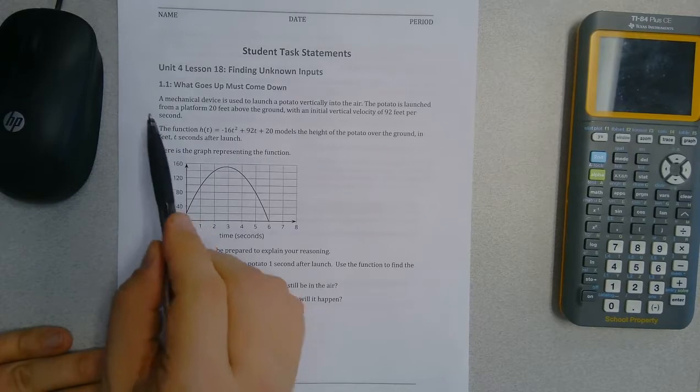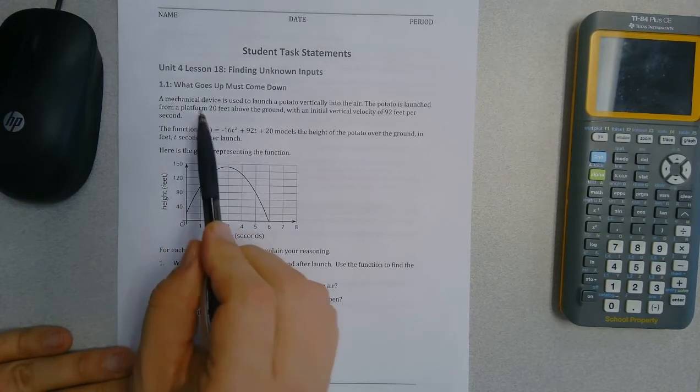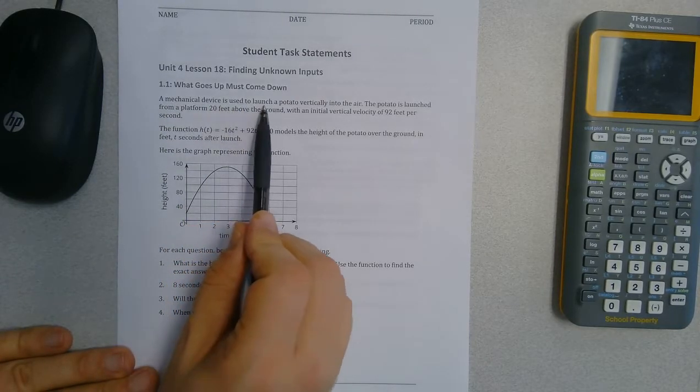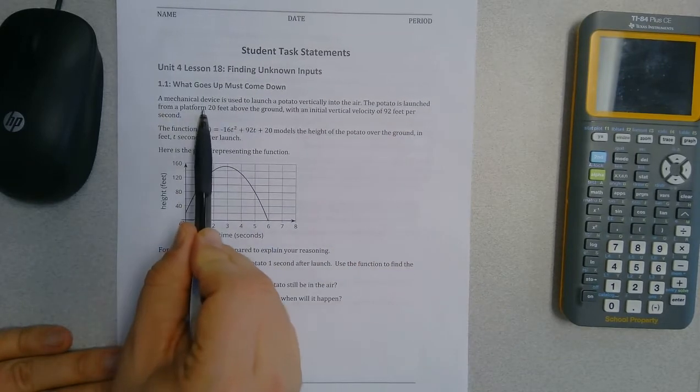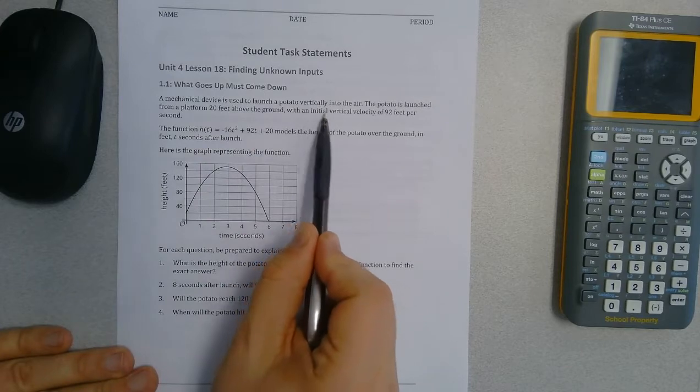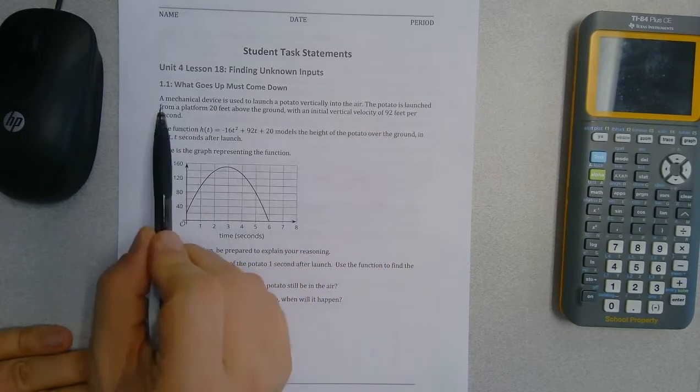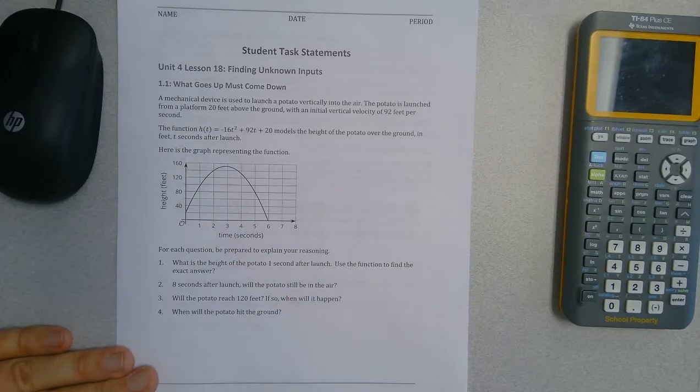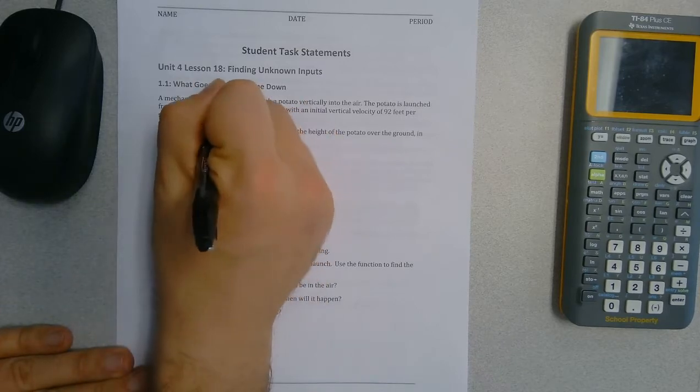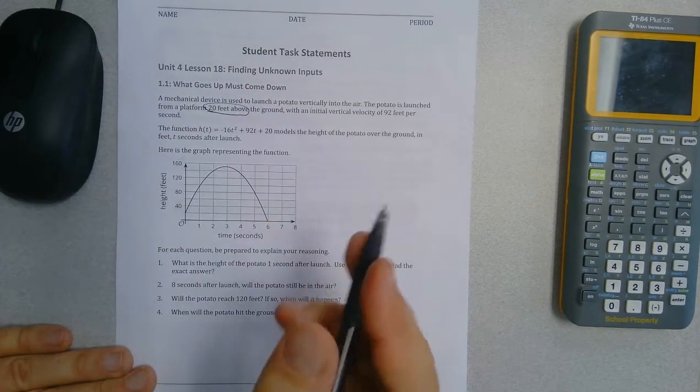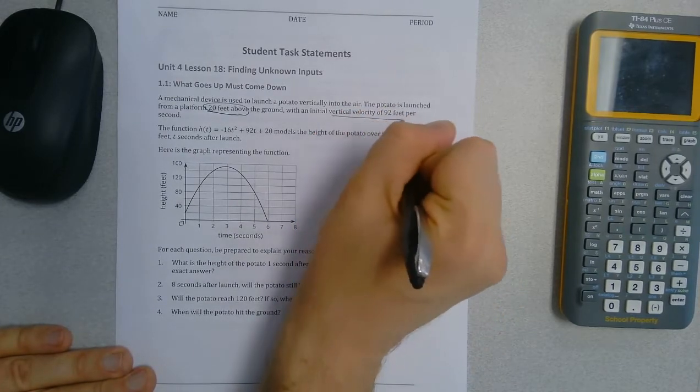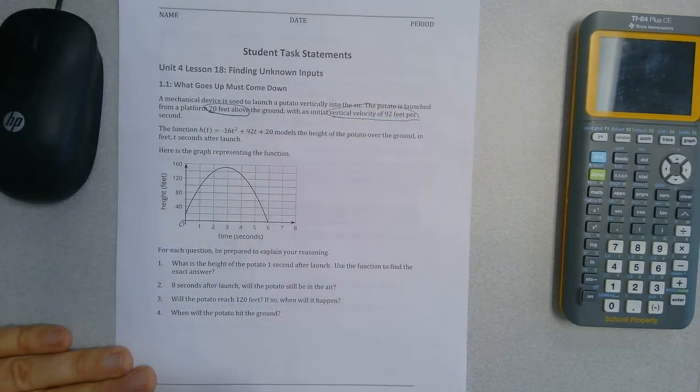So first, we're going to read and understand the problem. A mechanical device is used to launch a potato vertically in the air. The potato is launched from a platform 20 feet above the ground with an initial vertical velocity of 92 feet per second. Now, I'm going to circle this and put 20 feet above the ground. That seems important. And our initial velocity is 92 feet per second.